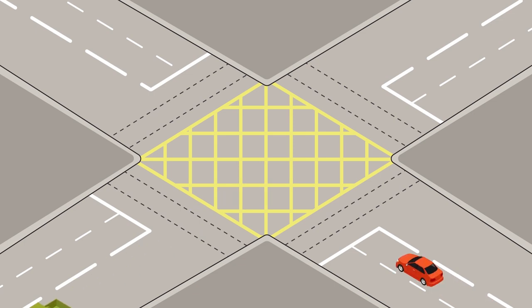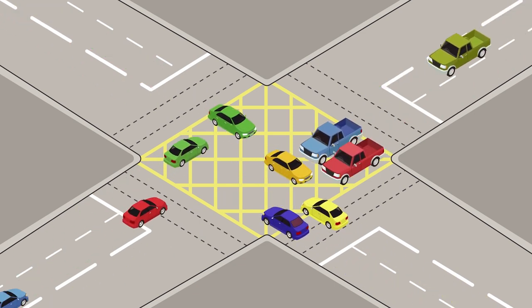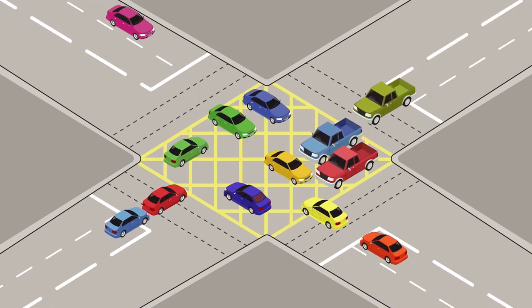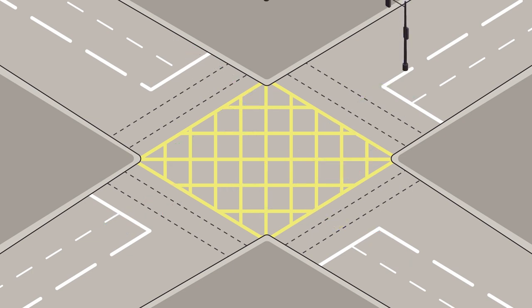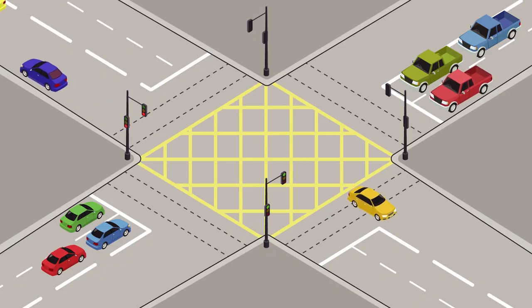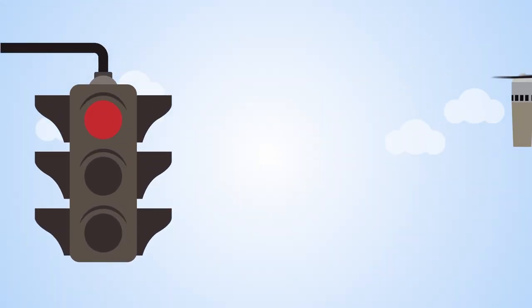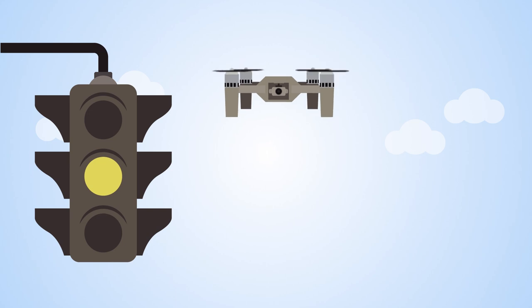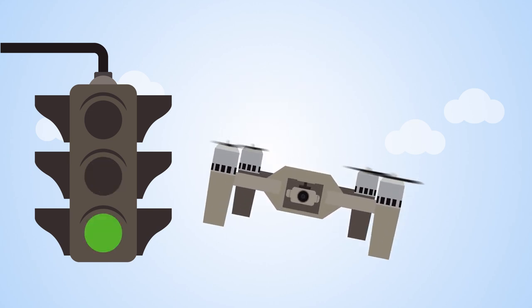The situation the aviation industry is facing is comparable to road traffic. When there are just a few cars using the road, drivers are generally capable of avoiding obstacles and staying safe. But when you increase traffic, measures such as traffic lights are required. So, the question is, how do we implement some sort of traffic light measures in our skies?